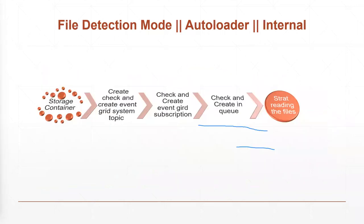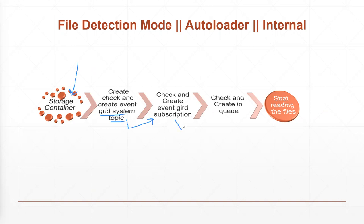So let's get started on how it actually works. File notification mode basically uses Azure Events. In layman's terms, when a file comes into the storage container, file detection mode will create an event grid system topic. Inside that topic it will create one subscription, and based on that subscription one queue will be created. From this queue, auto loader will be notified that a file has arrived and will start reading it.